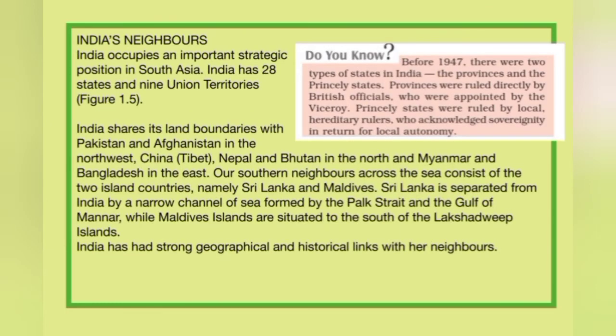India's neighbors: India occupies an important strategic position in South Asia. India has 28 states and 8 union territories — note that books may not be fully updated, but you need to remember 28 states and union territories.